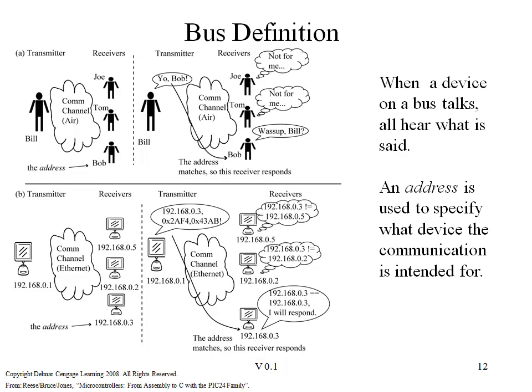The I2C is a bus in its own right, in the sense that each device on the bus has a specific address. As an analogy, every device on the internet has a unique address, which allows you to move data from one computer to another.